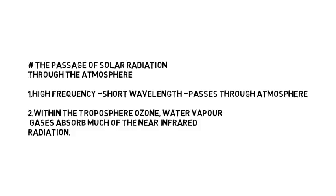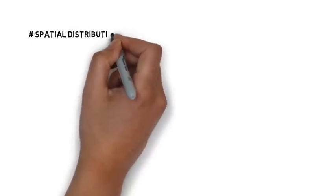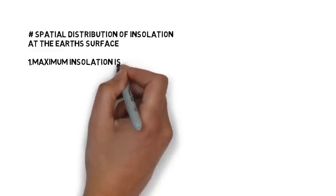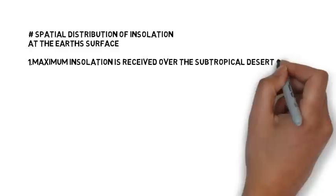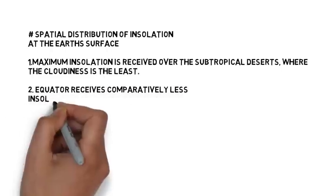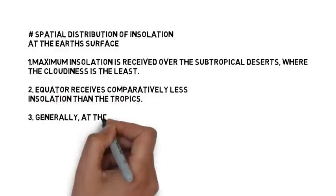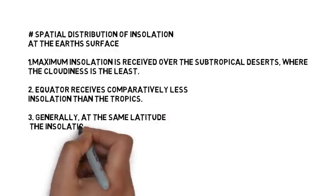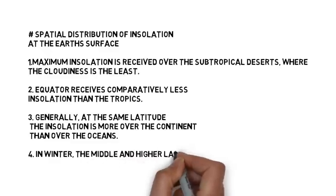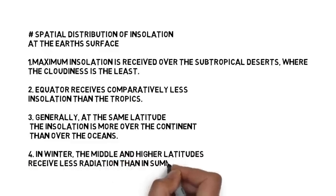Finally, the spatial distribution of insolation at the earth's surface. Maximum insolation is received over the subtropical deserts where cloudiness is the least, because most clouds reflect back the insolation and since subtropical deserts have the least cloudiness, maximum insolation is received. The equator receives comparatively less insolation than the tropics. Generally, at the same latitude, insolation is more over the continent than over the ocean. And in winter, the middle and higher latitudes receive less radiation than in summer.